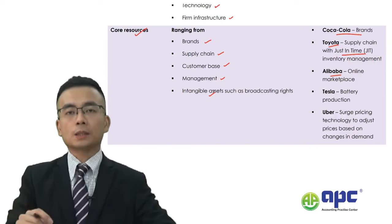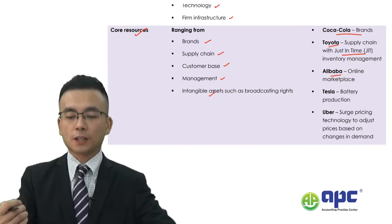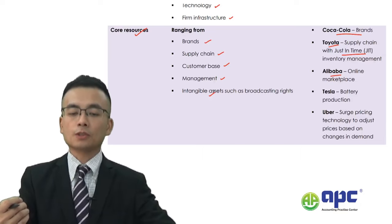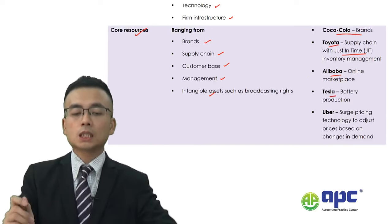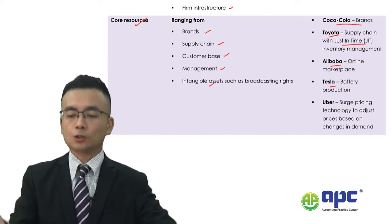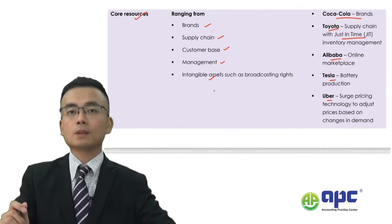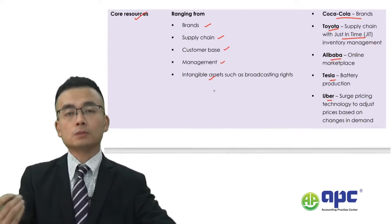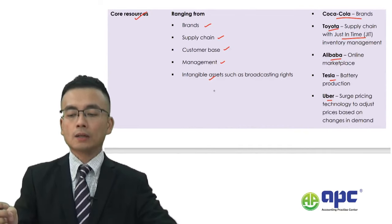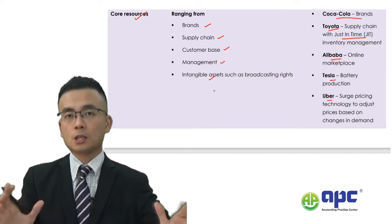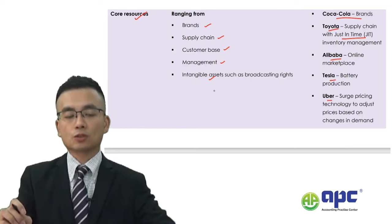For Alibaba, a Chinese online marketplace provider, the core resources are of course supply chain, customer base, and brand. For Tesla, the core resources are its brand and also the battery production technology. For Uber, the core resource is the surge pricing technology — making sure prices are adjusted based on changes in demand during peak and off-peak times.